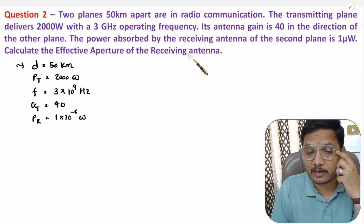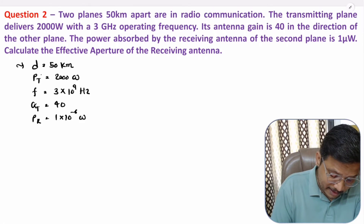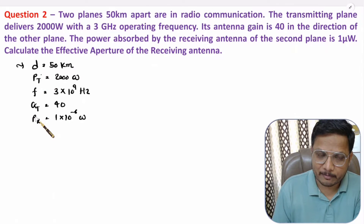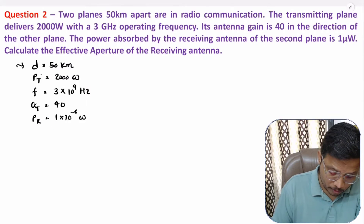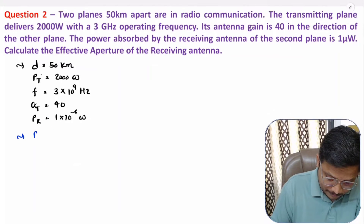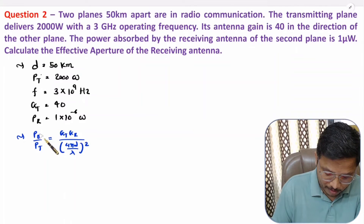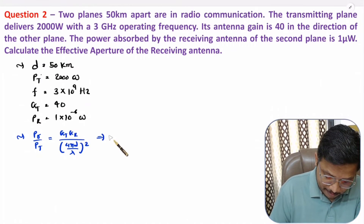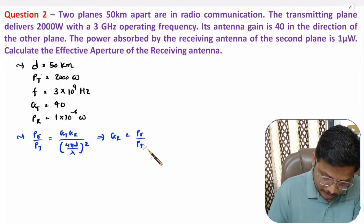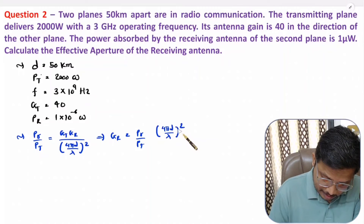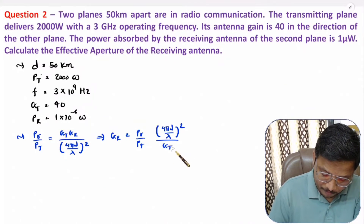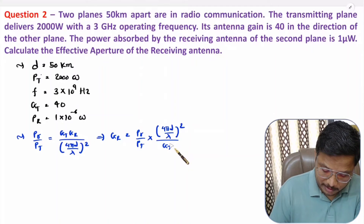We need to calculate the effective aperture of the receiving antenna. First, we identify the receiving antenna's gain using the Friis transmission equation: Pr/Pt = Gt × Gr / (4π × d/λ)². Rearranging for Gr: Gr = (Pr/Pt) × (4π × d/λ)² / Gt.